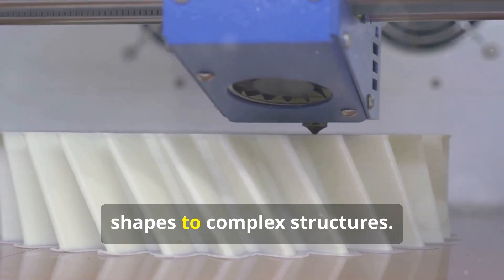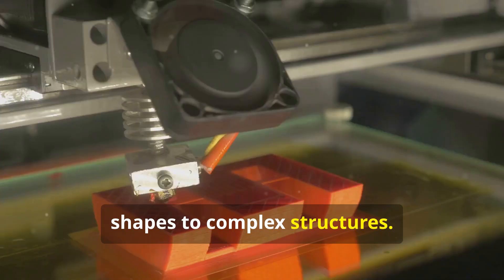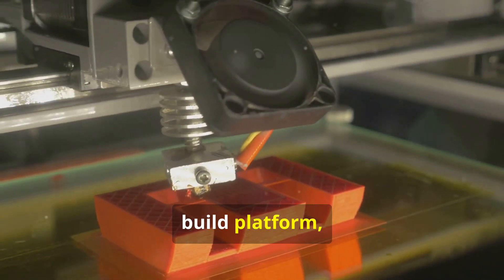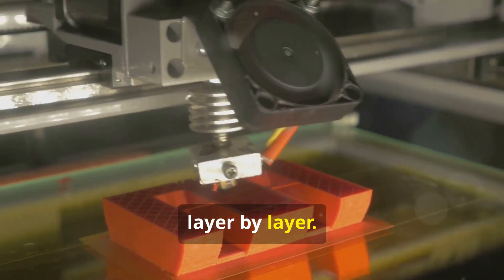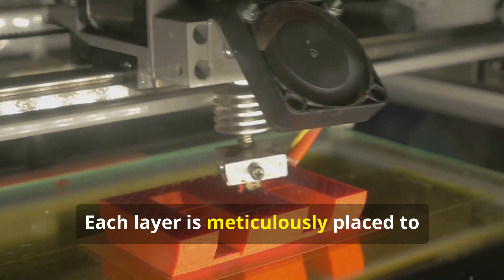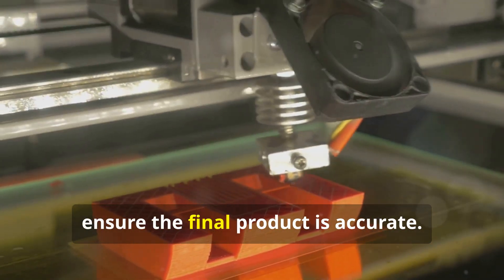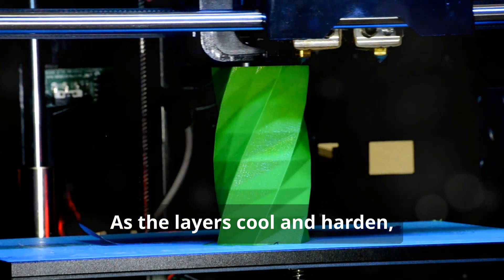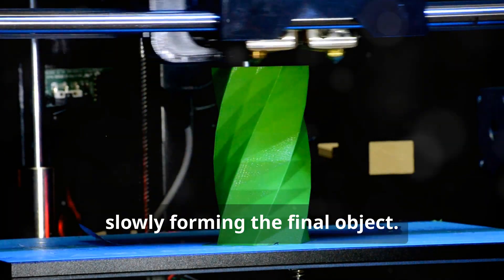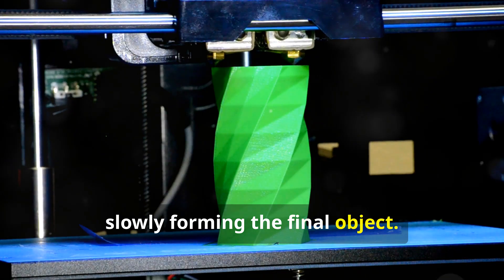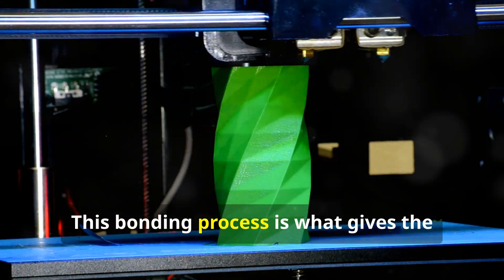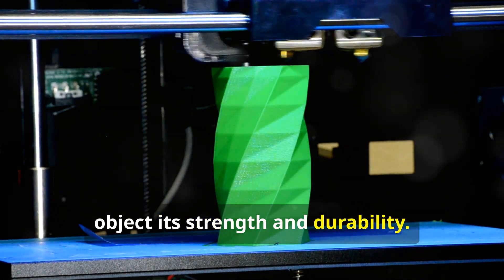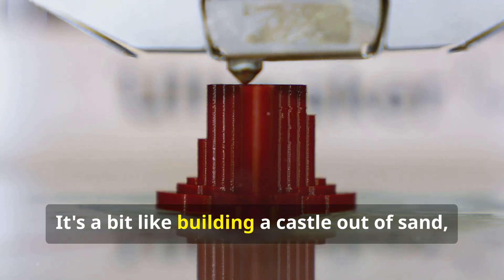It deposits the liquid plastic onto a build platform layer by layer. Each layer is meticulously placed to ensure the final product is accurate. As the layers cool and harden, they bond together, slowly forming the final object. This bonding process is what gives the object its strength and durability.